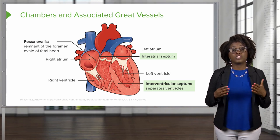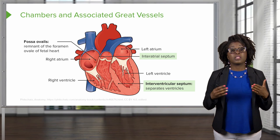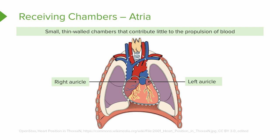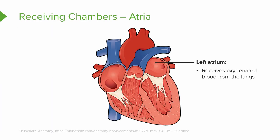We also have the interventricular septum, which separates the left and the right ventricle. Starting with our receiving chambers, we notice that the atria are small, thin-walled chambers that contribute very little to the propulsion of blood. Within these chambers, we have the auricles, which are appendages that increase the volume of the atria. The left atrium of the heart receives oxygenated blood returning to the heart from the lungs, and there are four pulmonary veins that feed into this left atrium from the lungs.